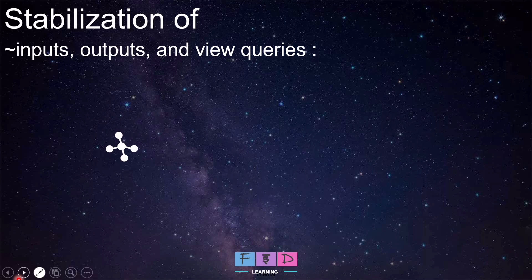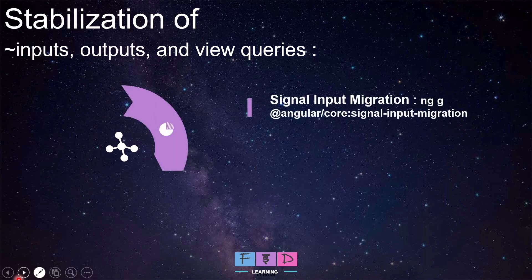The next feature is stabilization of inputs, outputs, and view queries. Angular version 19 introduces three separate automatic refactoring tools we can choose to run on our code. The first tool is Signal Input Migration, which converts inputs using the decorator API to the new signal-based inputs with the command: ng generate @angular/core:signal-input-migration.